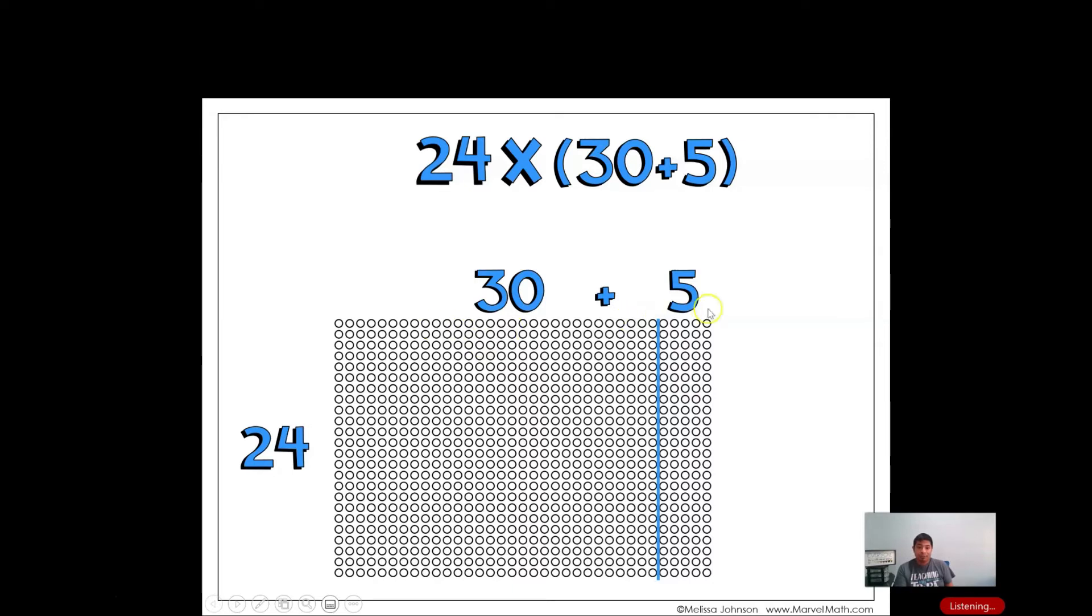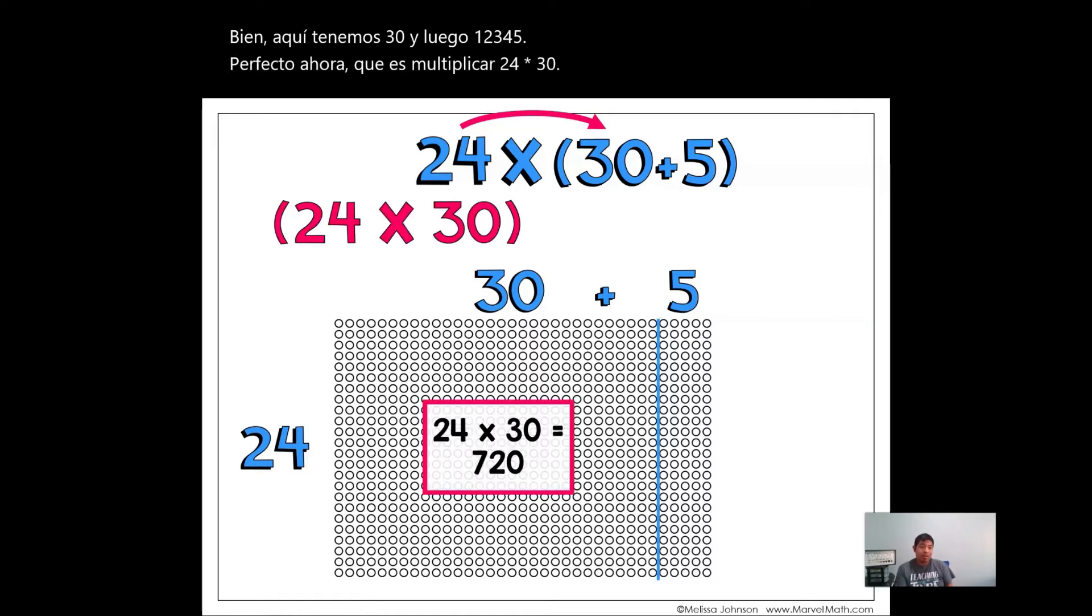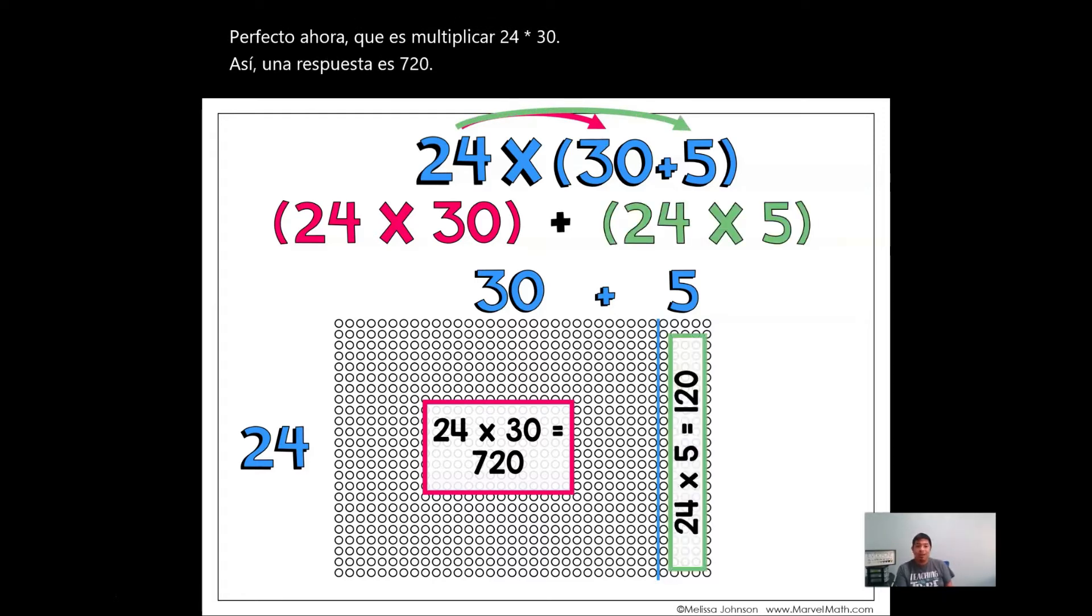We take that away and then we add in 30 plus 5. And here we have 30 and then 1, 2, 3, 4, 5. Perfect. Now, we just multiply 24 times 30, just like that. And our answer is 720. And we also multiply 24 times 5, just like that. And our answer is 120.